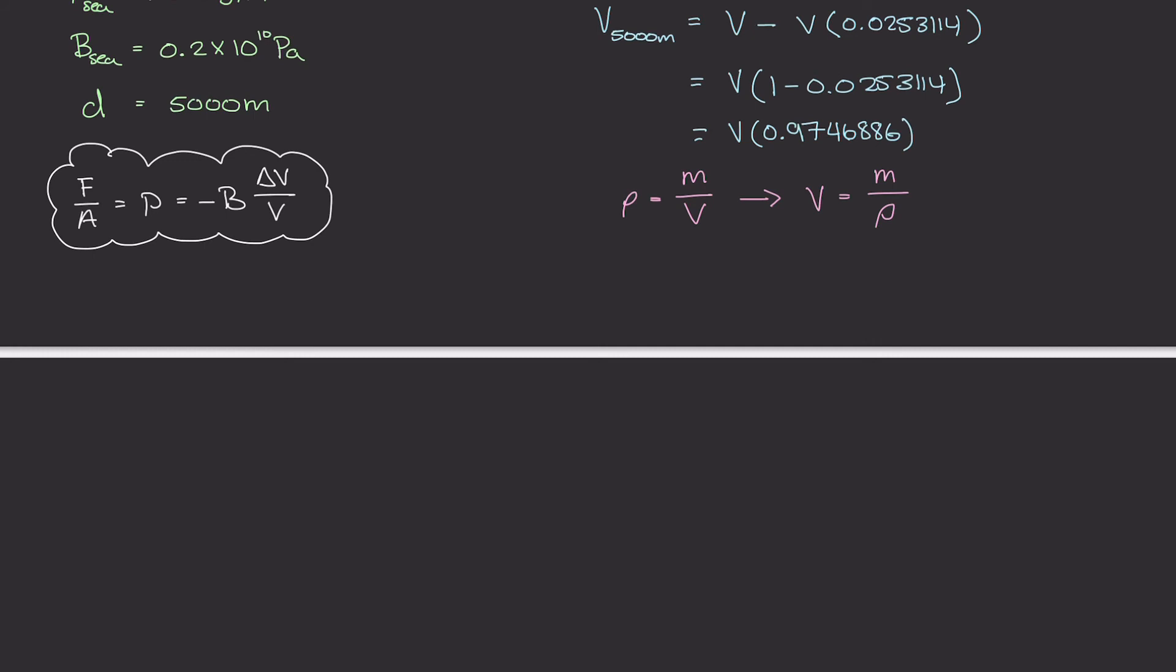So the volume at 5000 meters is going to be mass over the mass density at 5000 meters. And that is equal to volume, the original volume. So that's mass over the original mass density of water times 0.9746886. And you'll notice here that the masses on both sides cancel out because although the volume is shrinking, the mass of that water or that liquid is going to remain the same. Only the mass density is going to change because the volume compresses by a very tiny amount.